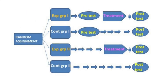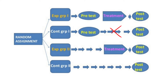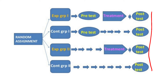In the schematic representation, you randomly assign subjects to Experimental Group 1, Control Group 1, Experimental Group 2, and Control Group 2. In Experimental Group 1, you do a pre-test. In Control Group 1, you also do a pre-test. Treatment is given to Experimental Group 1 and Experimental Group 2. For Control Group 1, there is no treatment. For Control Group 2, there is no pre-test and no treatment. But the post-test is done uniformly for all 4 groups.